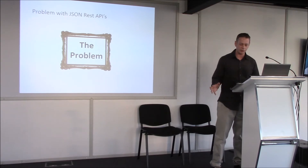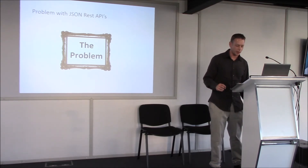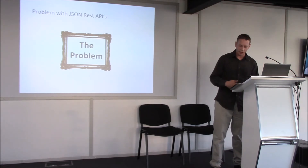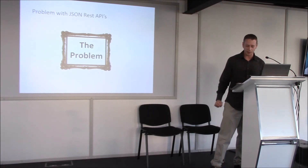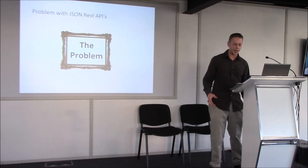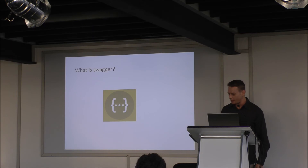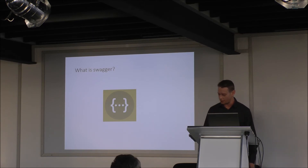We can't auto-generate code from a JSON API alone, which means we have to code our own inputs and outputs that we send to the REST API. This makes it slower, more prone to error, and without a clear contract between the client and server.